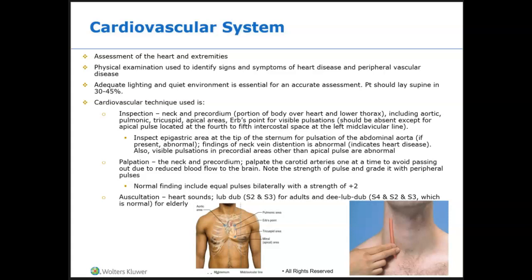We are going to palpate the carotid artery medial to the sternomastoid muscle in the neck between the jaw and the clavicle — palpate one at a time, because if you try to palpate both carotid arteries simultaneously, you're going to make your patient pass out due to reduced blood flow to the brain. Normal findings include equal pulses bilaterally with a strength of plus two. Abnormal findings might include absent pulses, weak pulses, thready pulses, or asymmetrical pulse strength.